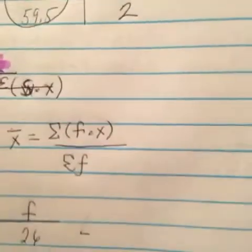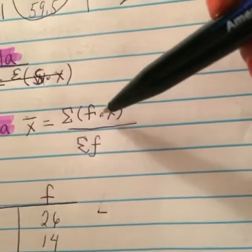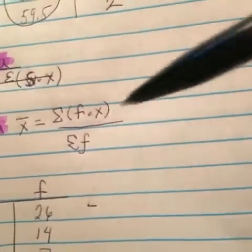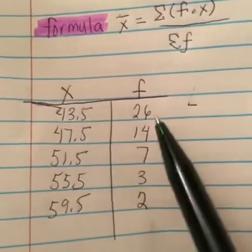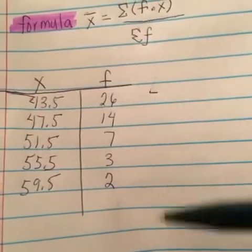Once you have done that, the next thing you want to do is go back to your formula. The formula is f times x, so you want to multiply x and f. We're going to multiply each one of these and we'll put what we get right here.